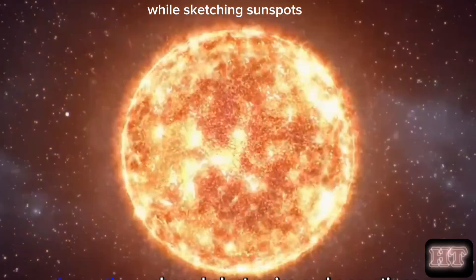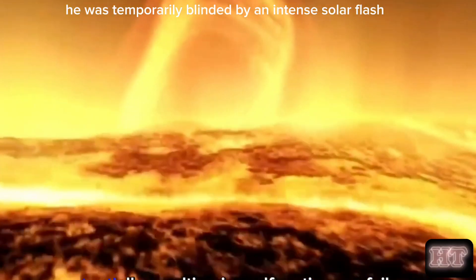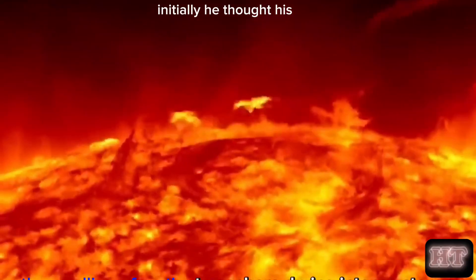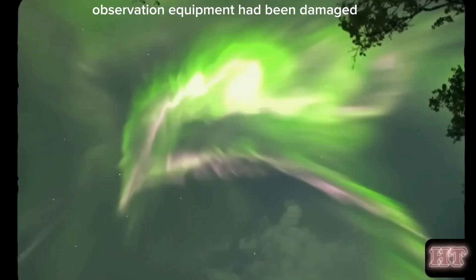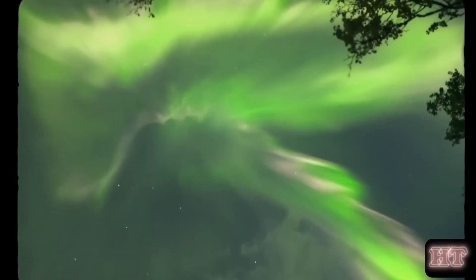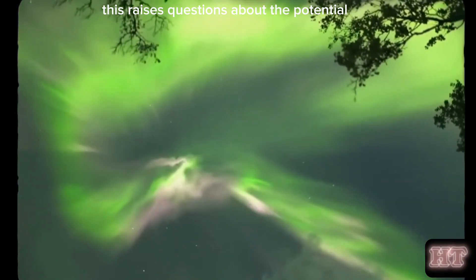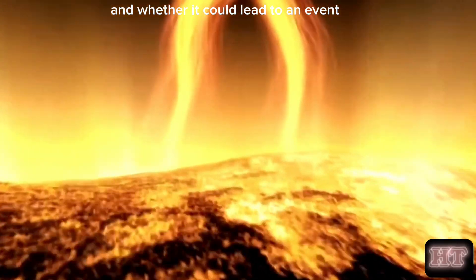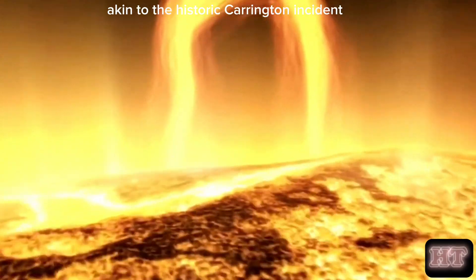While sketching sunspots on September 1st, he was temporarily blinded by an intense solar flash. Initially, he thought his observation equipment had been damaged due to the brightness of the event. This raises questions about the potential impact of the upcoming solar maximum, and whether it could lead to an event akin to the historic Carrington Incident.